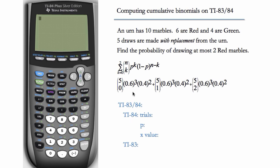Each of them is found using a binomial formula. This is the probability of exactly zero red marbles, plus exactly one red marble, plus exactly two red marbles.